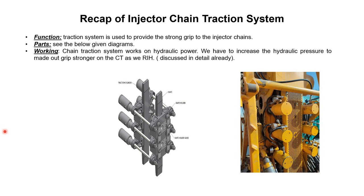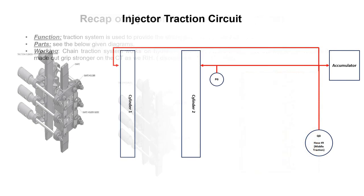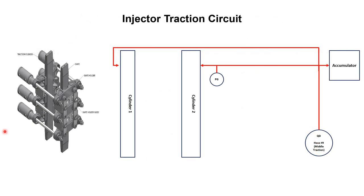Now we will go to our main topic, which is the hydraulic circuit of the chain traction system in the injector head. Here we have the hydraulic circuit for the chain traction system. This hydraulic circuit starts from the quick disconnect coupling. As we have seen, there are three pairs of hydraulic cylinders, so there are three separate circuits for each pair. We will discuss only one circuit — the other two are similar, with only the hose numbers changed.